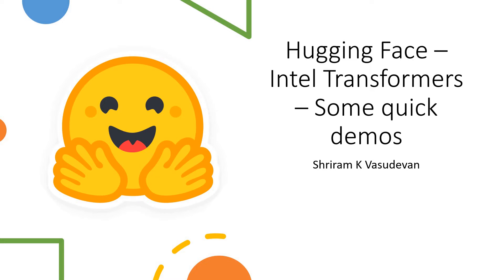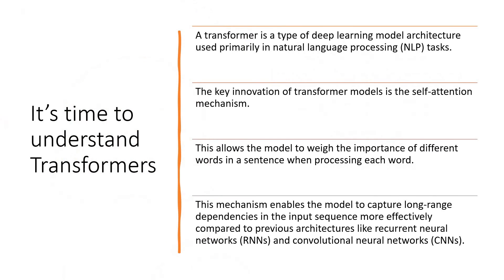These models are available for you to pick up and run with ease. Before we go into it, we should understand what a transformer is. A transformer is a type of deep learning model architecture used primarily in NLP tasks. The key innovation is the self-attention mechanism, which allows the model to weigh the importance of different words in a sentence when processing each word. This enables the model to capture long-range dependencies in the input sequence much more effectively compared to previous architectures like CNN or RNN.